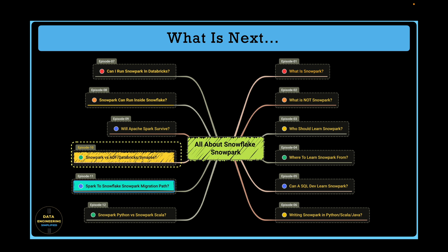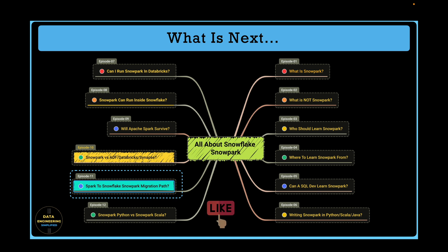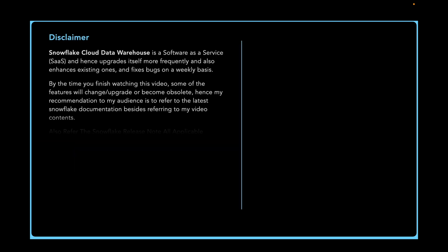Features that are not feasible now might become possible in the near future. Thanks for watching episode 10. In our upcoming chapter, chapter 11, we will talk about Apache Spark to Snowpark migration path — a very interesting episode of this playlist. If you have learned something valuable, don't forget to press the like button and share with other data engineers and Snowflake developers. Happy learning and keep growing.